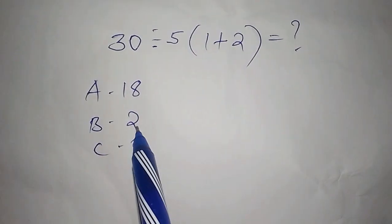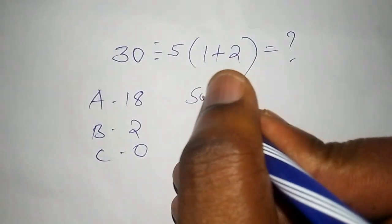So a is 18, b is 2, c is 0. So let's begin first with the solution.